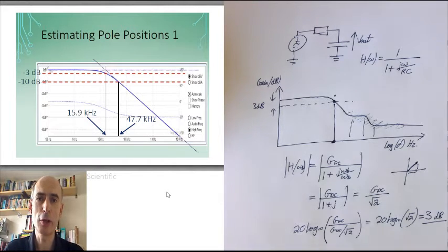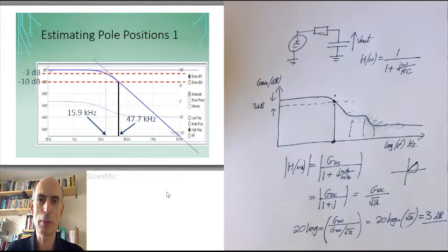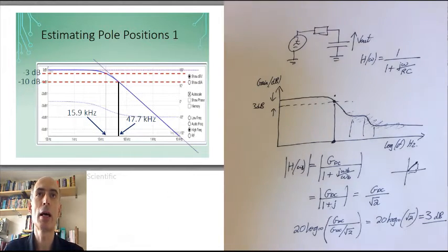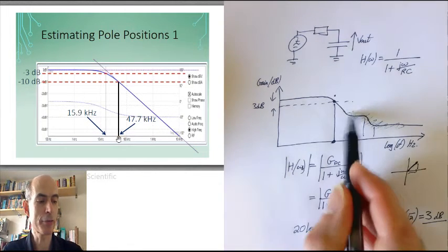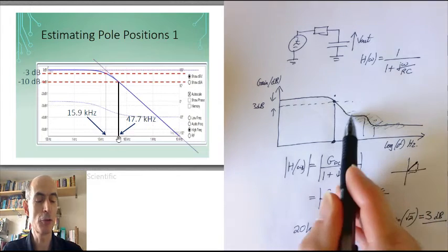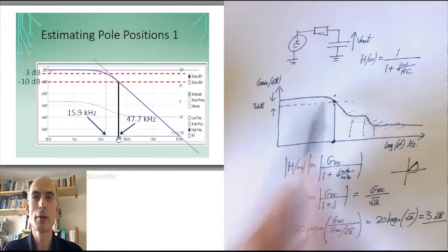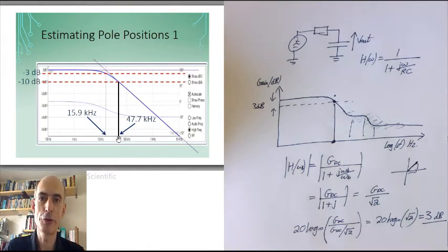You may remember that when we looked at op-amp bandwidths, we also derived the fact that the 10 dB bandwidth was 3 times the break frequency. So you could do it by looking at the frequency at which the gain has dropped by 10 dB from its low frequency value and then dividing that frequency by 3. However, that requires any higher frequency poles and zeros to be even further away from the break frequency of your lowest pole.